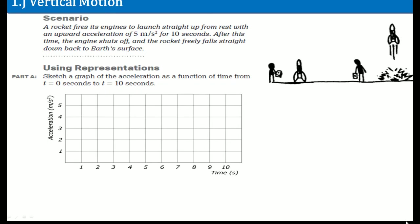Using this representation, sketch a graph of the acceleration as a function of time from t equals 0 to t equals 10 seconds. We have to read the scenario very carefully and understand that it says for the first 10 seconds, it has an upward acceleration of 5 meters per second squared. The acceleration doesn't change — it's constant.